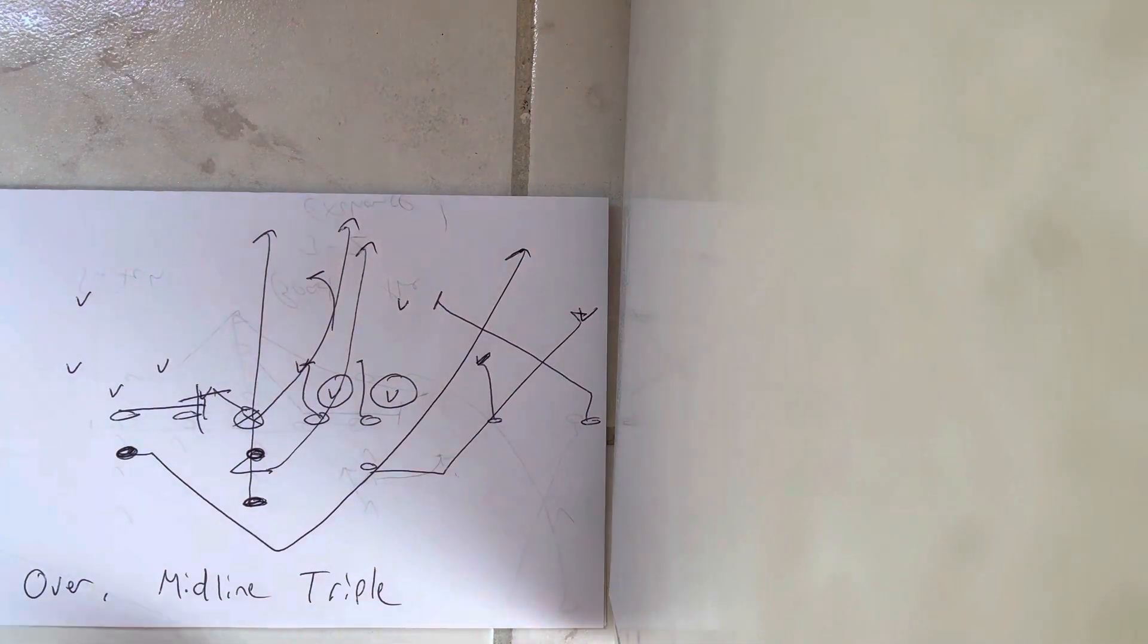And then he would run it to the nub. In high school, most of the time if you go over, they're going to slide the safety.